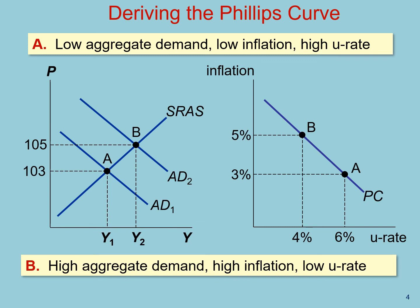If instead aggregate demand next year is relatively high, reflecting, for example, rapid money growth, then outcome B will occur. In outcome B, the price level is 105 next year, so the inflation rate is equal to 5%. Output Y2 is higher, so unemployment is lower, at 4%. As aggregate demand shifts, it moves the short-run equilibrium along the short-run aggregate supply curve. These short-run equilibria translate into a negative relationship between unemployment and inflation rates on the graph to the right. In the short run, the Phillips curve is the same idea depicted in the short-run aggregate supply curve, but translated to a different graph.